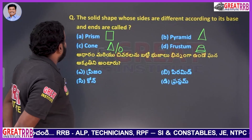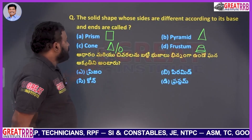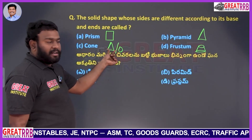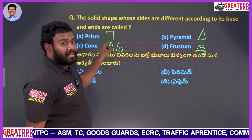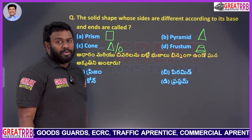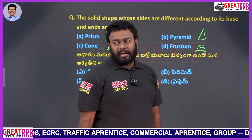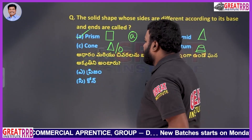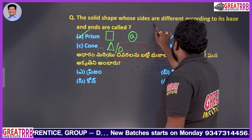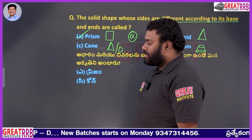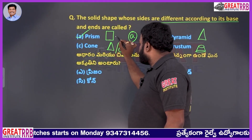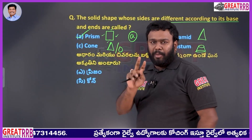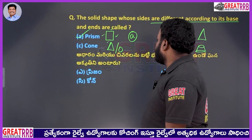The sides must be different and compared to the base as well. For example, a hexagonal prism has a hexagonal base but rectangular sides — the end has a hexagon, the side has a rectangle. So prisms have different sides and ends. Option A, prism, will be the right answer.